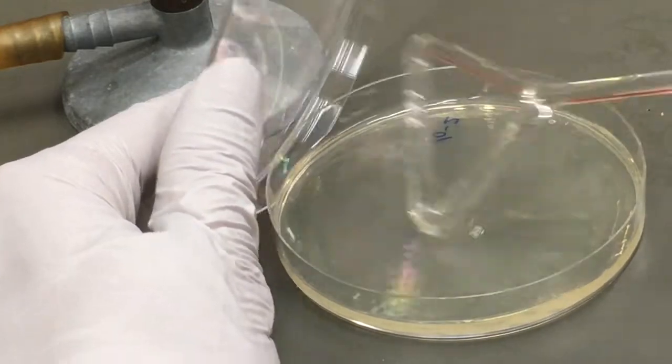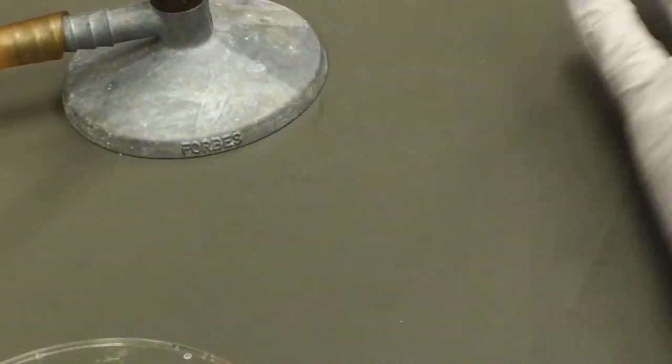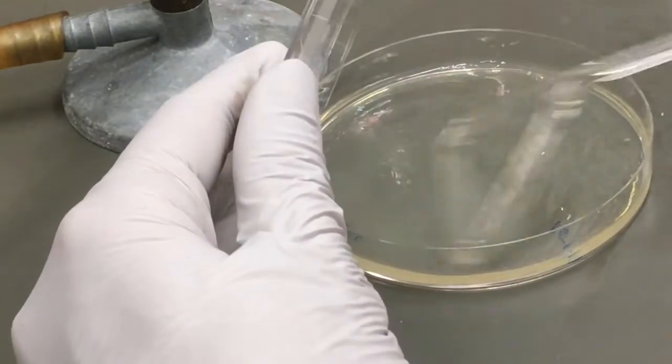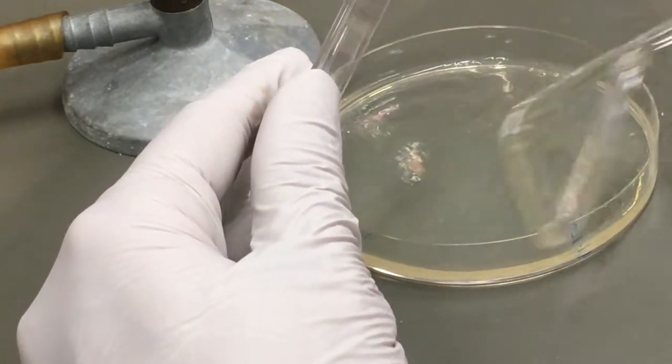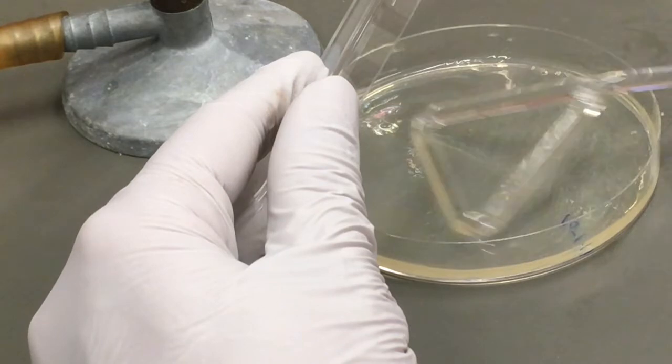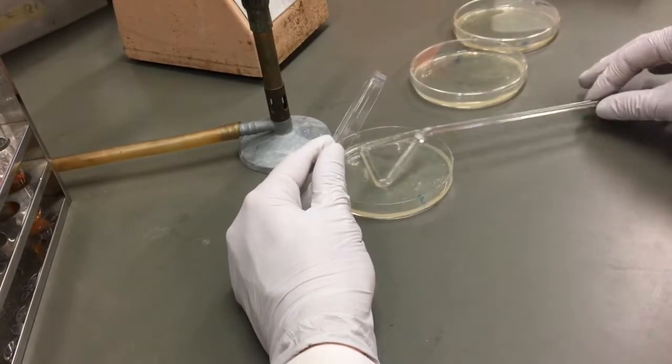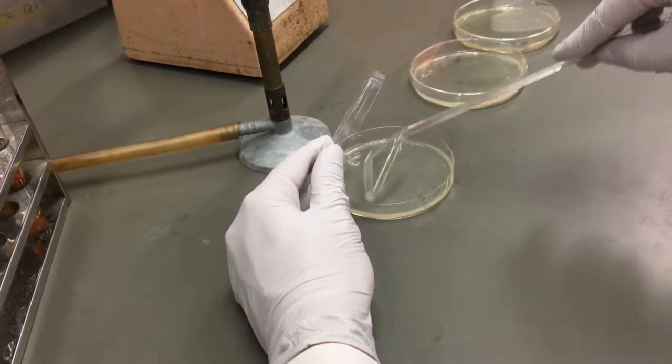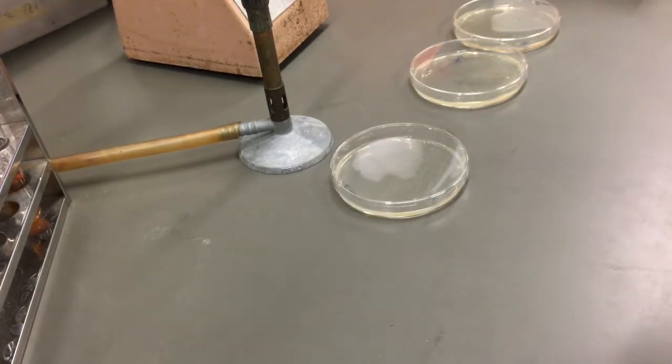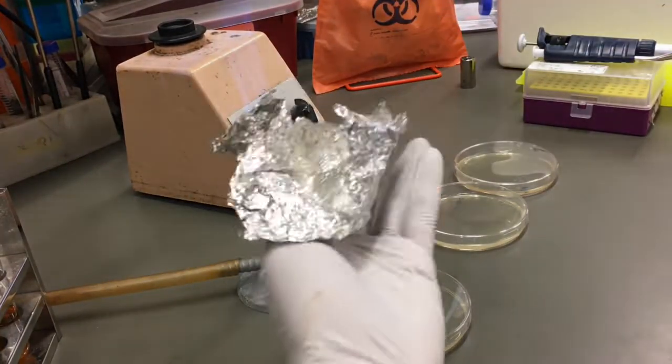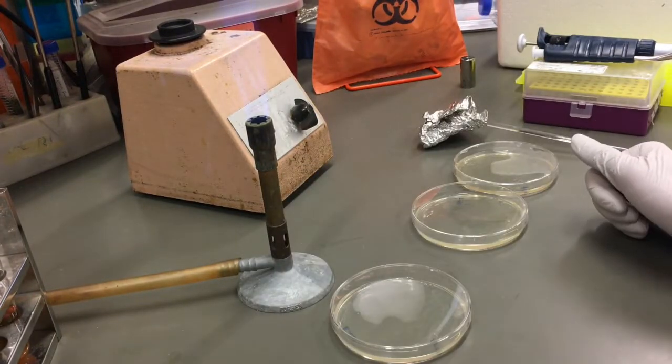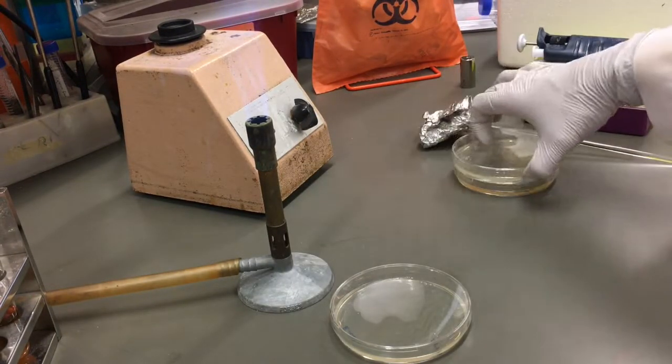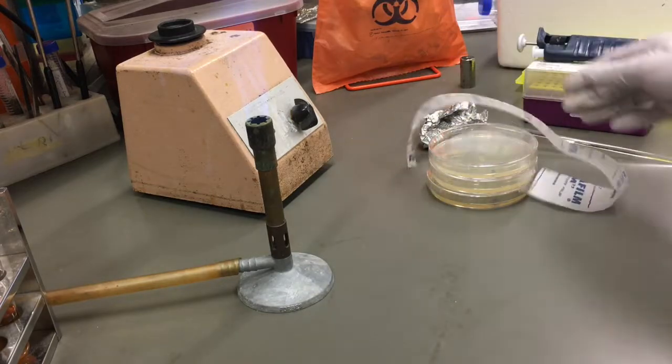Since we've begun with the most dilute sample and we're working our way up in concentration, we're able to use the same spreader as we're not transferring any significant amount of bacteria to the next plate. Once you've completed all of your plates, place the spreader into the bleach for decontamination or wrap in foil in an autoclave sterile. When you return to count the colonies that develop on your plates, only those plates that contain between 30 and 300 colonies are statistically relevant and can be used to calculate the concentration of your initial stock.